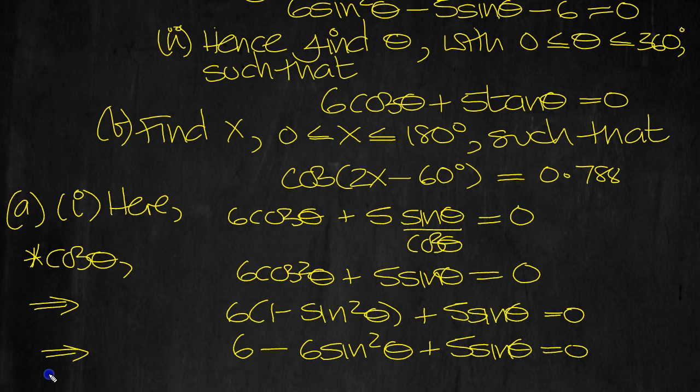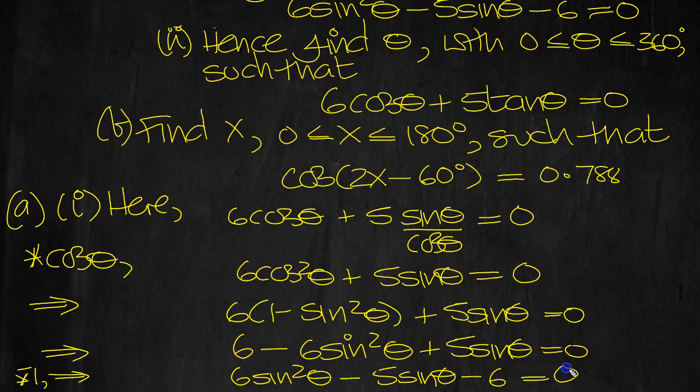And then multiply all the way through by minus 1. Here, and write this term first. Write this term second, minus 5 sine theta, and times this by a minus as well, minus 6. 0 times minus 1 is still 0. That's what we wanted to show at the top, just here.